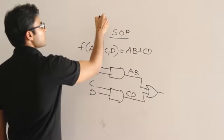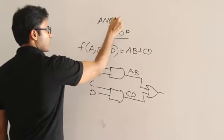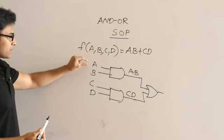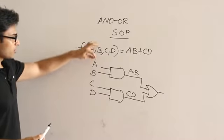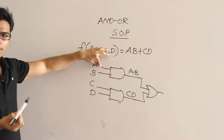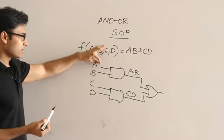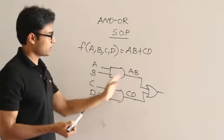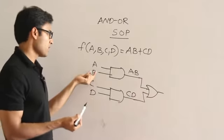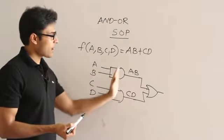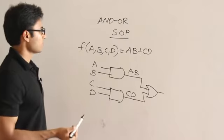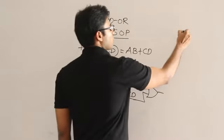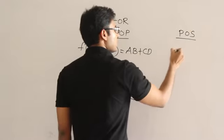Sum of products is easy to realize using AND-OR. If you have negative terms, you simply add a NOT gate before the AND — we don't count that NOT gate separately. So even with a NOT, it is still called AND-OR realization. Another way to represent a function is as product of sums.